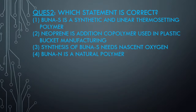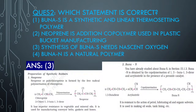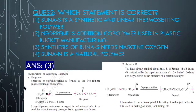Question 2: Which statement is correct? Answer is option 3 - that synthesis of Buna S needs nascent oxygen. Let us see the options: Option 1 says Buna S is a synthetic linear thermosetting polymer - wrong. Option 2 says Neoprene is an addition copolymer used in plastic bucket manufacturing - wrong. Option 3 says Buna N is a natural polymer - wrong, because natural rubber is polyisoprene. So the correct answer involves Buna S requiring nascent oxygen in synthesis.